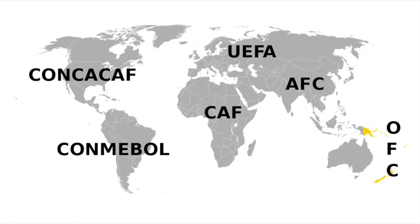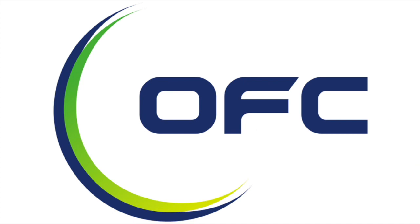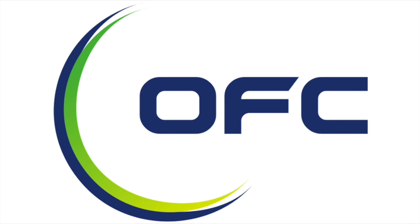Now we're going to go on a little tour of the FIFA regions. Starting down in Oceania — a tiny little region that Australia used to be part of, but they recently bolted for Asia, preferring to play against South Korea rather than Papua New Guinea. They have their Nations Cup, usually won by New Zealand, who also usually qualifies for the World Cup from there. They also have a Champions League — Auckland City of New Zealand has won it seven times, so New Zealand dominates football down there, but that ain't saying much.